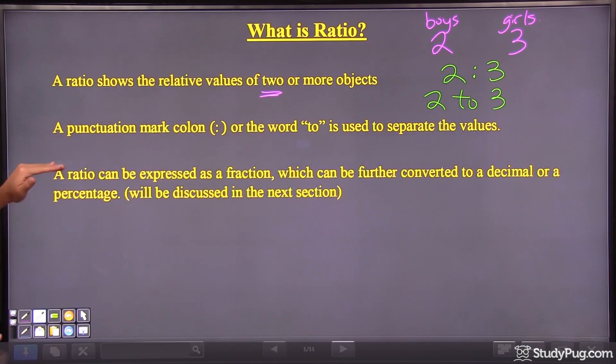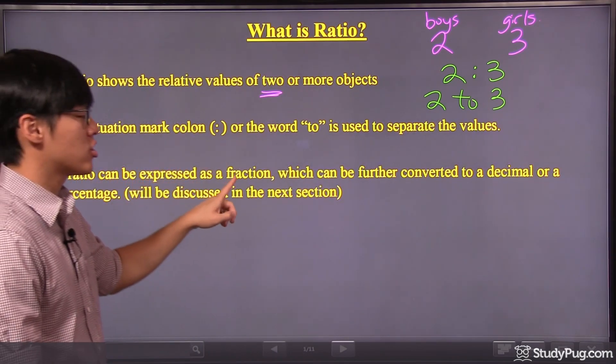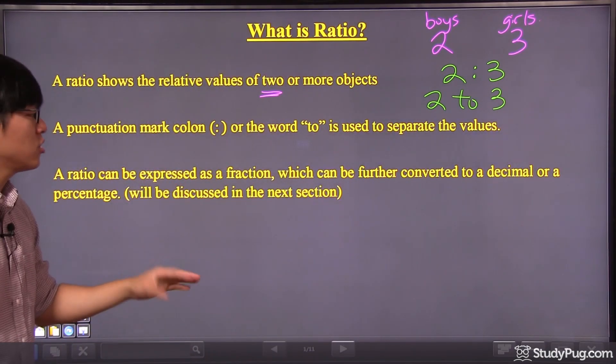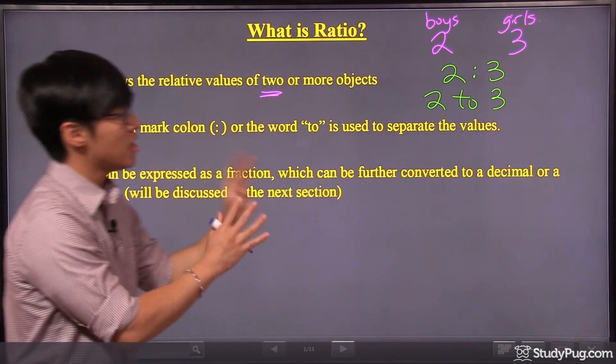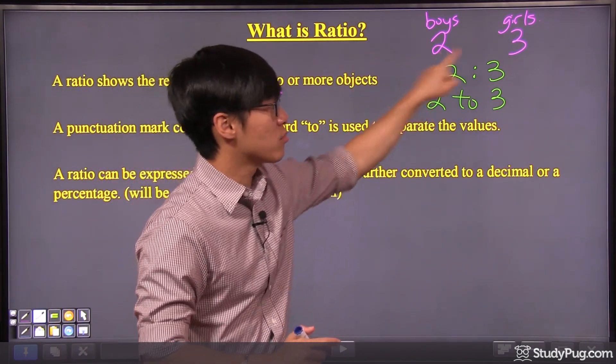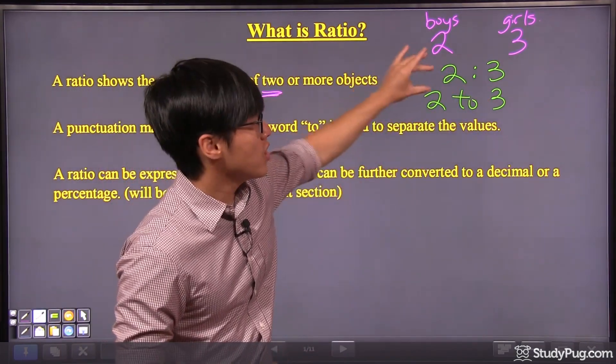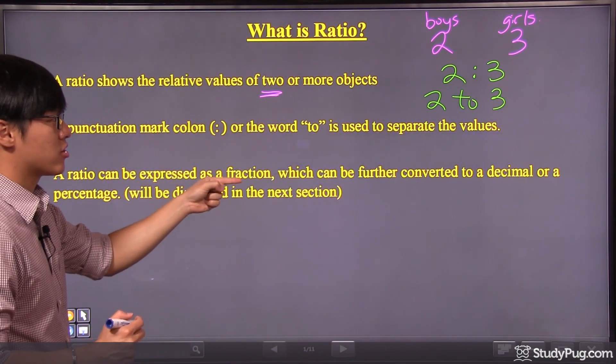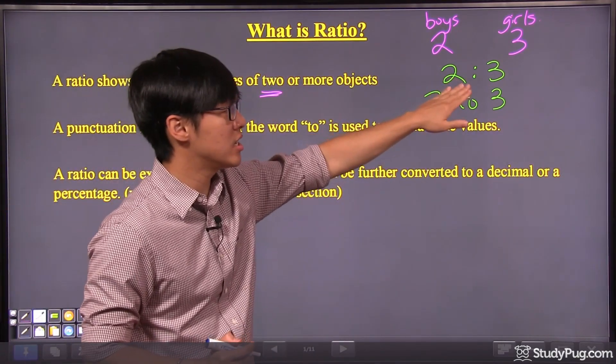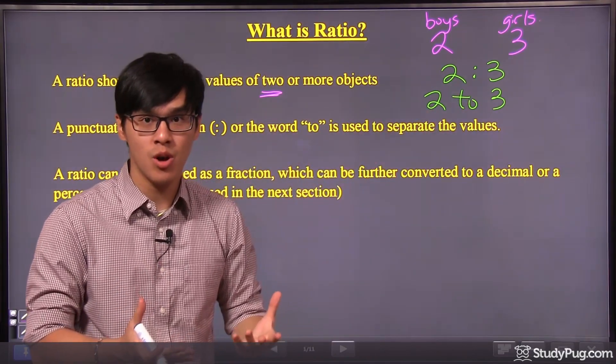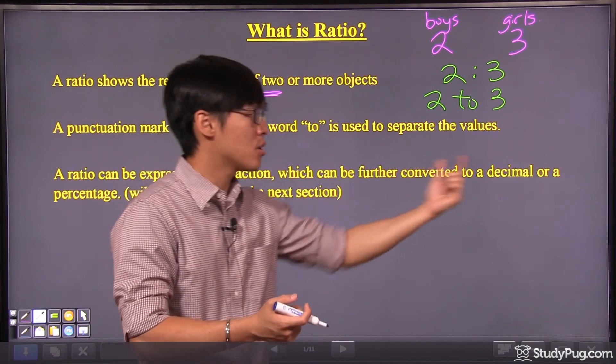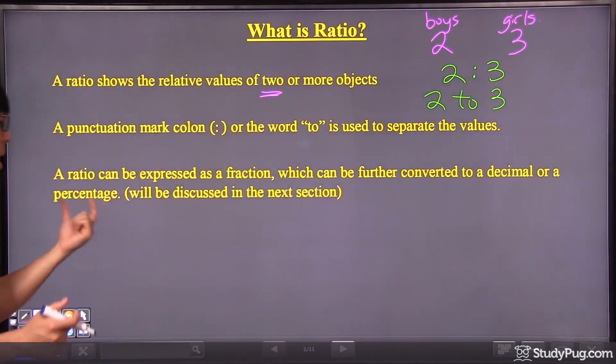Next, a ratio can be expressed as a fraction which can be further converted to a decimal or a percentage. Here we are focused on ratios. A ratio can always be expressed as a fraction. We can convert this into a fraction, and as we know, a fraction can be again converted into either a decimal or a percentage.